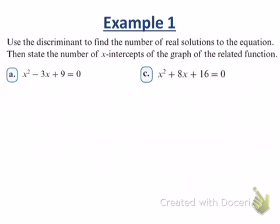So b² - 4ac here would give us what? Zero. Zero. That's correct. 8² is 64. 4 times 1 times 16 is also 64. 64 minus 64 is zero. What does that tell us? One real solution. One real solution. Right? It also tells us that it is a perfect square trinomial. Right? What's the factorization of x² + 8x + 16? x + 4. x + 4 times x + 4.